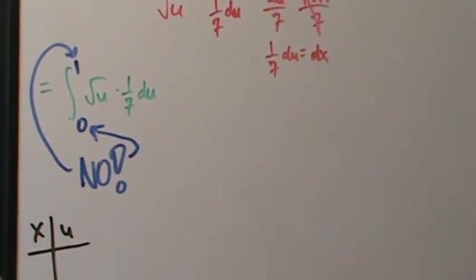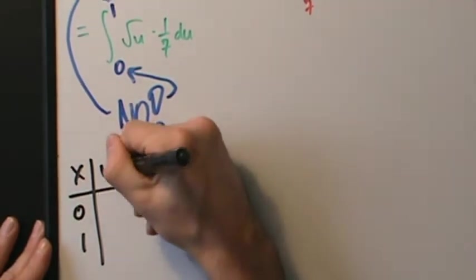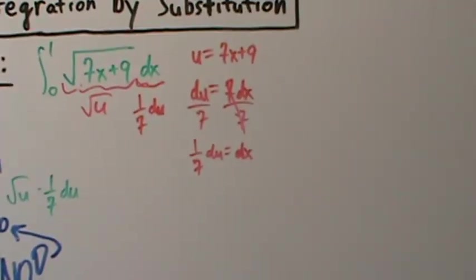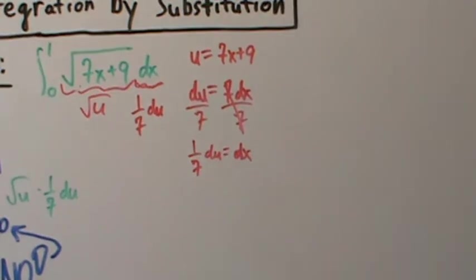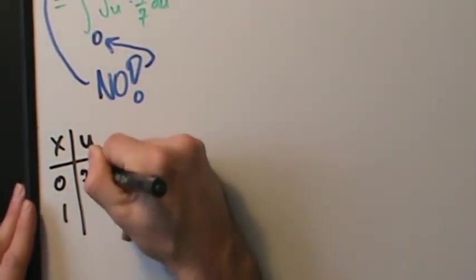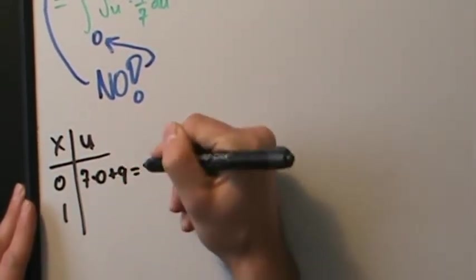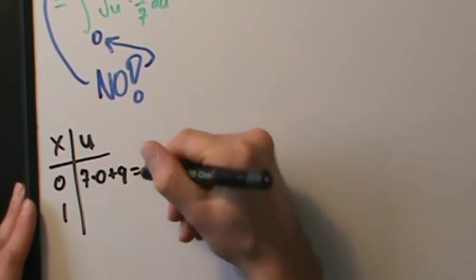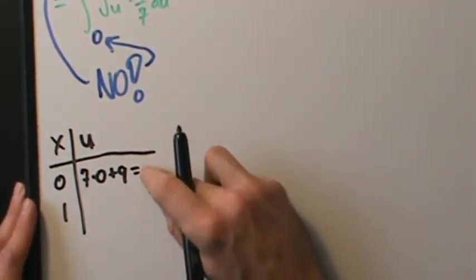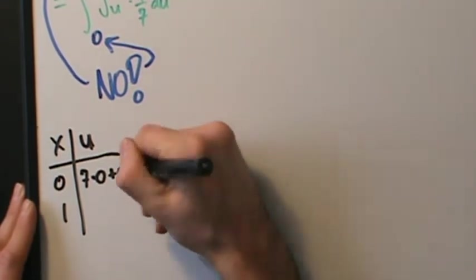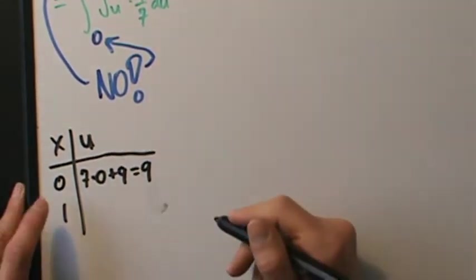In the chart: x goes from 0 to 1, and we want to know what u is. Remember, u = 7x + 9. When x = 0, u = 7(0) + 9 = 9.